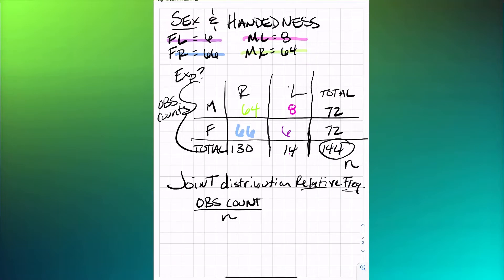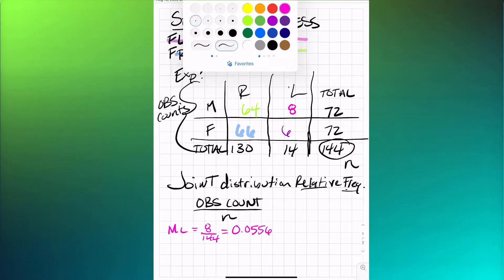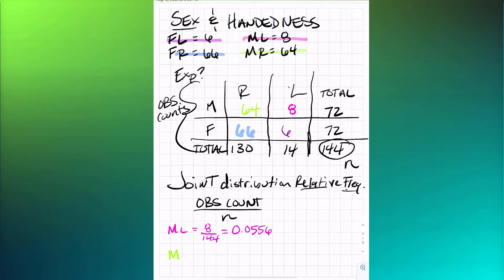For males that are left-handed, we have 8 over 144 as the observed count, giving a joint distribution relative frequency of 0.0556. For males who are right-handed, the observed count is 64 over 144, giving a joint distribution relative frequency of 0.4444.